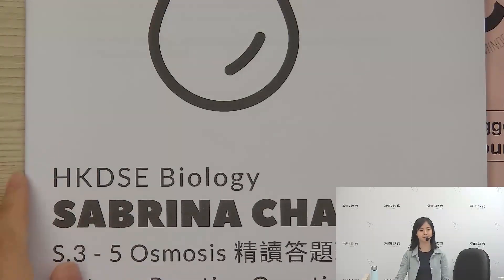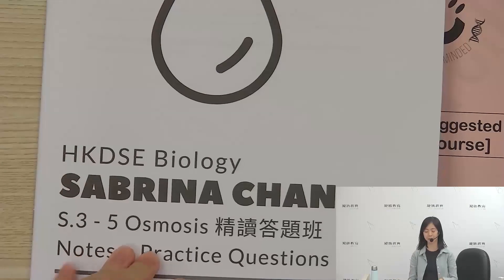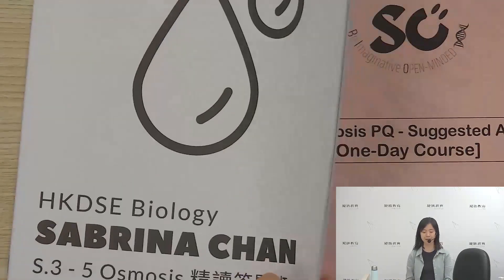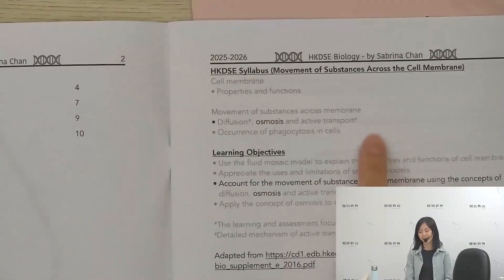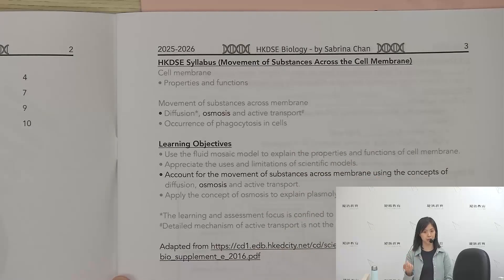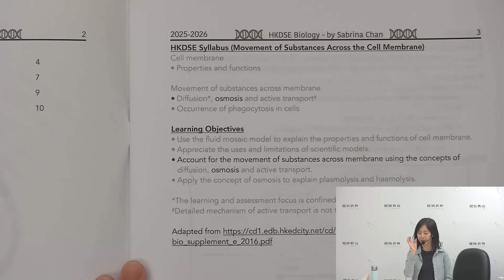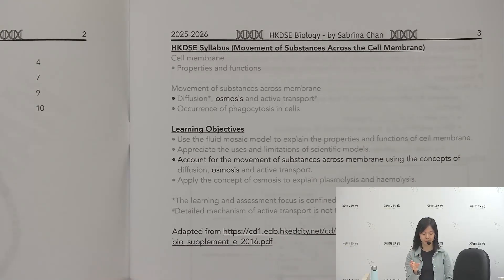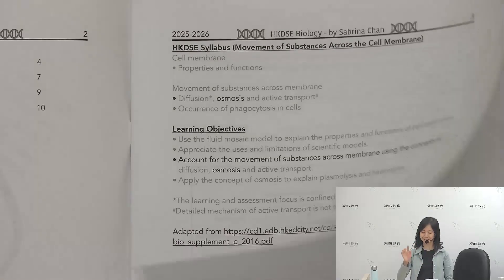Today's class is S3 to S5, an Osmosis one-day course. Today's class is talking about the movement of substances across the cell membrane. This course will be in the summer course.